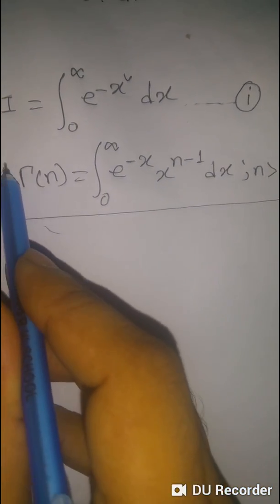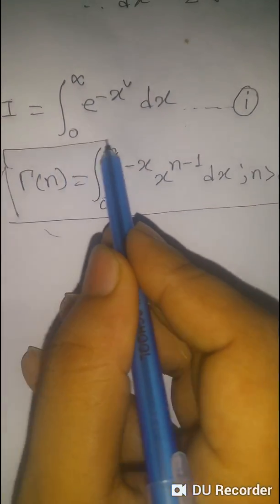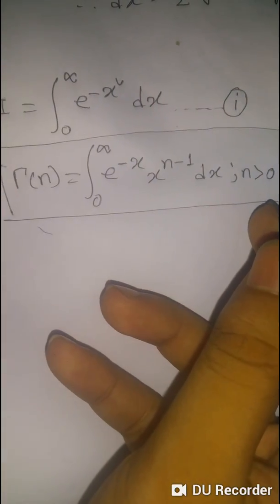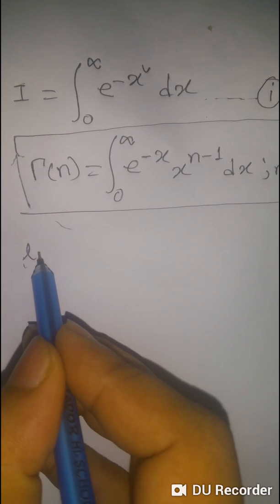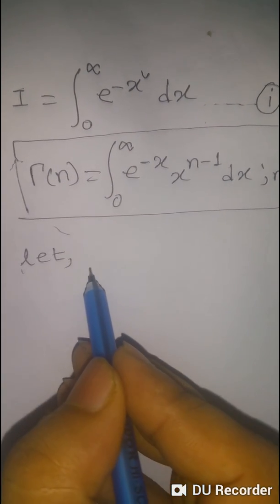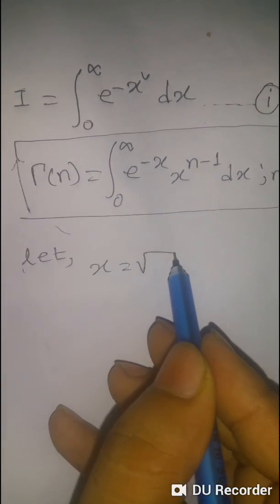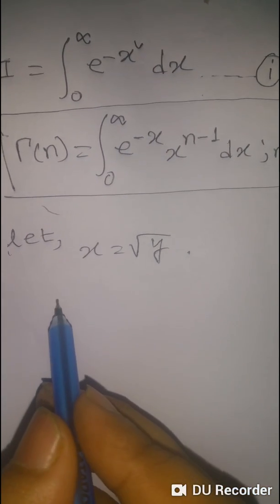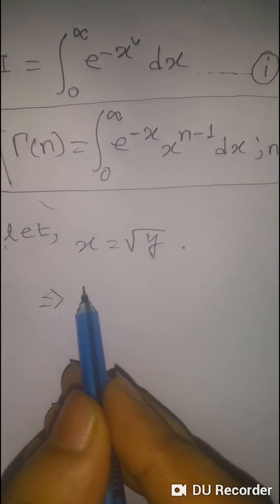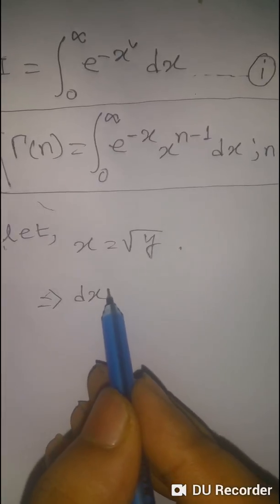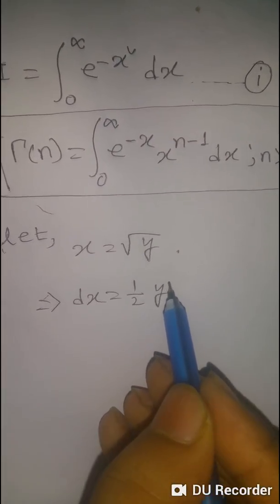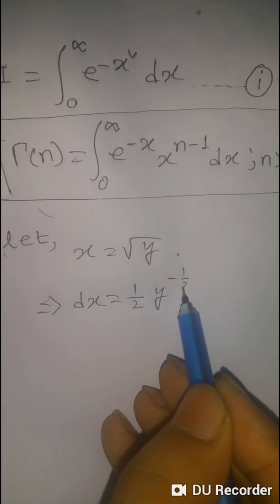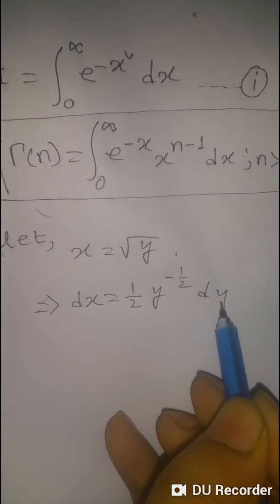So to get this form, first we put x equals root y. Then differentiate both sides, we get dx equals half y to the power negative half dy.